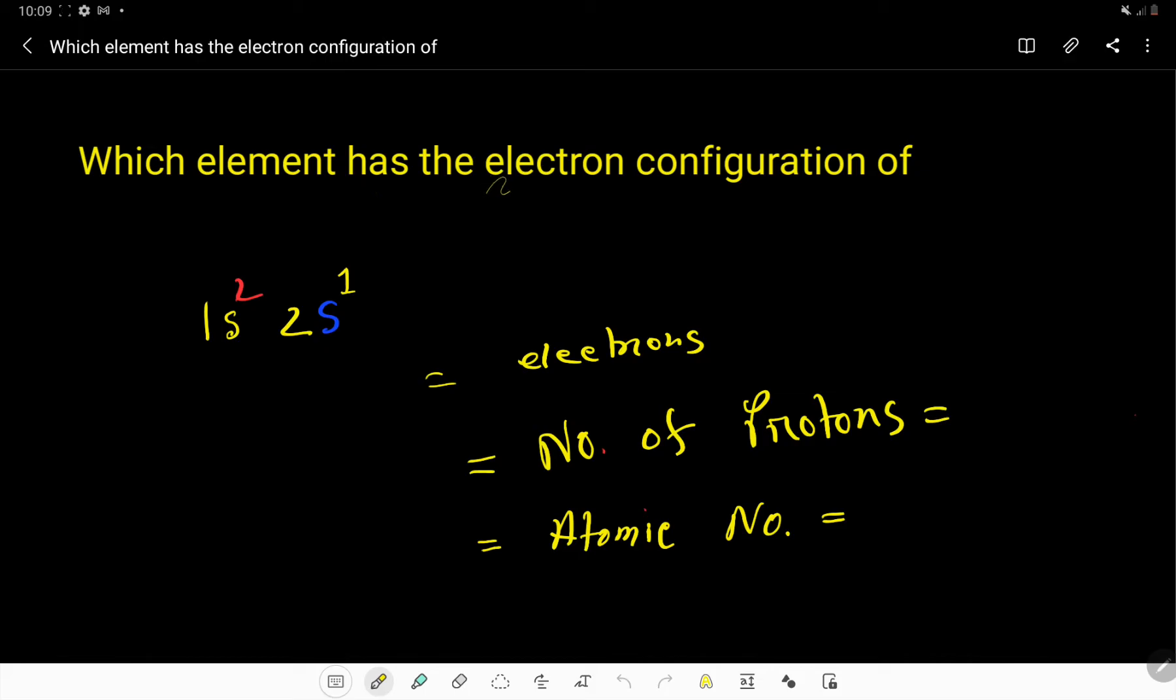Which element has the electron configuration 1s² 2s¹? To find out the name of the element, at first we have to count the number of electrons from this electron configuration.